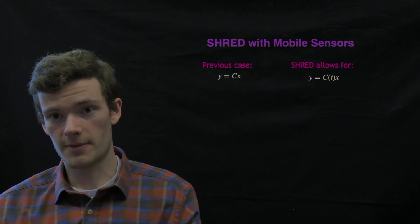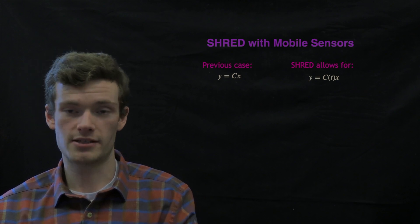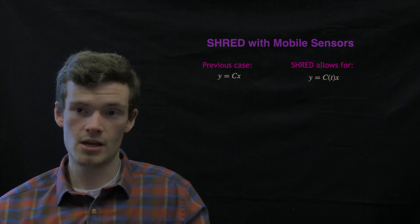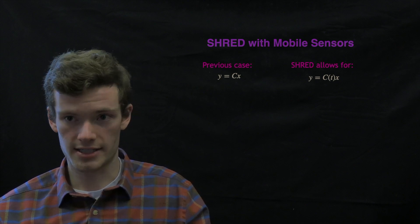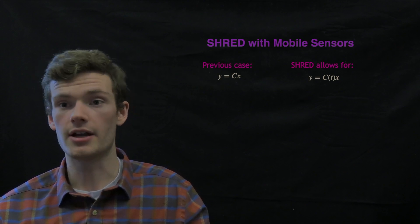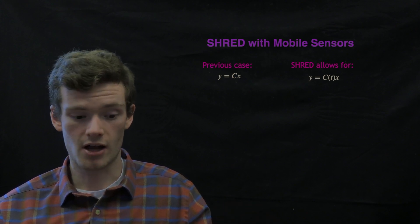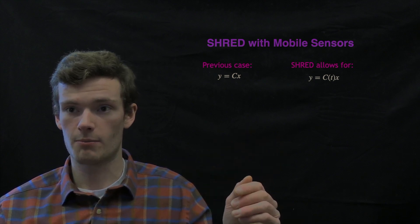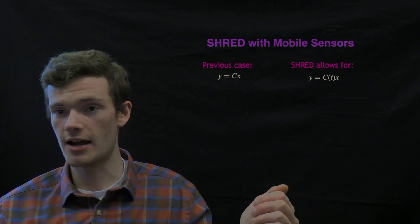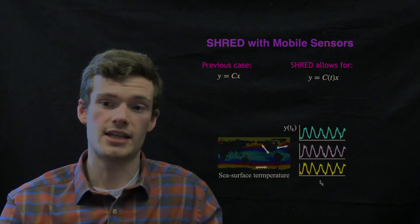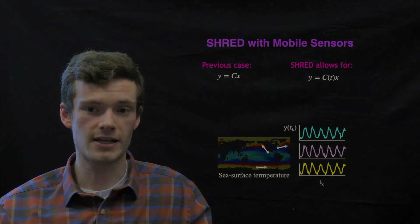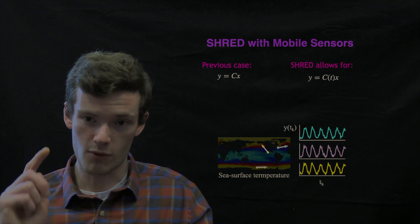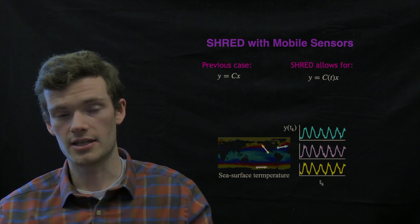So far, what we've talked about is SHRED with what I'll call immobile sensors, where this measurement operator C is fixed throughout time. One of the nice properties of SHRED is that it also allows for a time-varying measurement. Now, there are usually restrictions on what types of time variance you can allow for. Often, that means that C of T has to be periodic, but the flexibility is still nice in an example where we might want to estimate sea surface temperature from, say, global shipping lanes that are often run back and forth, rather than just buoys that are out in the ocean.